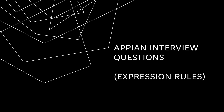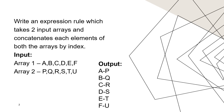Our first question is: we need to write an expression rule which takes two input arrays and concatenates each element by index. We have array 1 — a, b, c, d, e, f — and array 2 — p, q, r, s, t, u. The output should be a-p, b-q, c-r, d-s, e-t, and f-u, with a hyphen in between each pair.